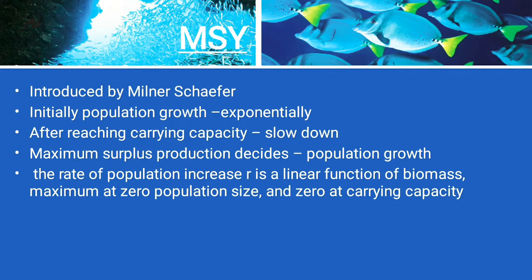The categories of fish stocks are: fully exploited, over-exploited, depleted, or recovering. We need one method with specific parameters to determine the size of the stock. For tropical fish in particular, we cannot determine age from scales or body structures, so we rely on other parameters.